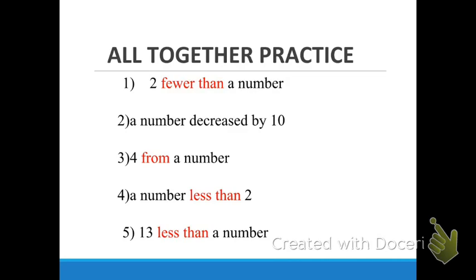The next little box says 'Altogether Practice.' I want you to answer these five. First, before you answer anything, highlight or circle all of the turnaround words that you see. Circle those first, then write your answers, and then we'll talk about them. In number one, are there turnaround words? Yes — 'fewer than.' So we should circle 'fewer than.'